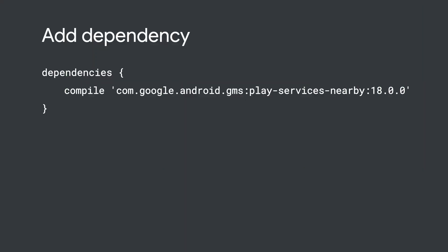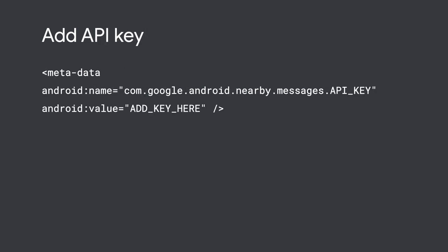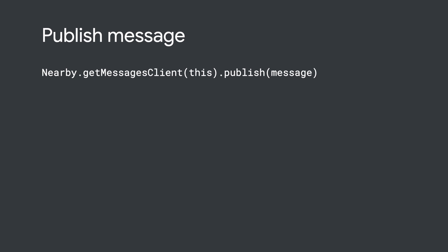To use the Nearby API, you must add the latest version of the GMS Play Services Gradle dependency. You will also need to use the Google Developer Console to get an API key and add it into the Android manifest file. Then your app can publish a message using nearby.getMessagesClient.